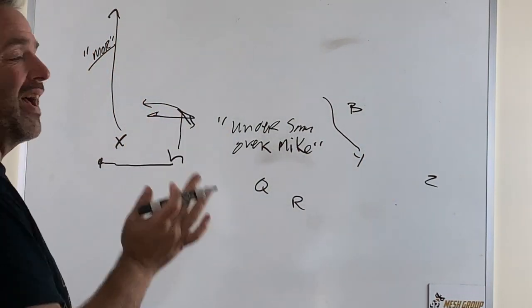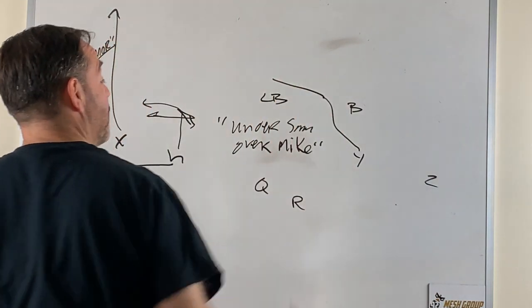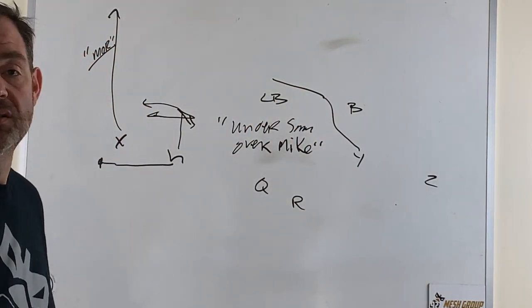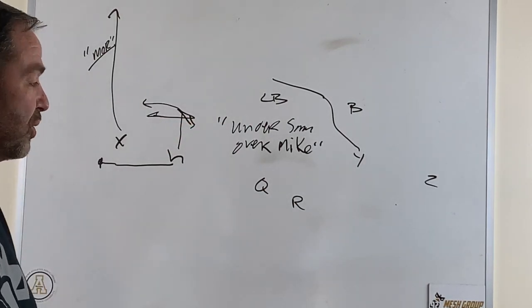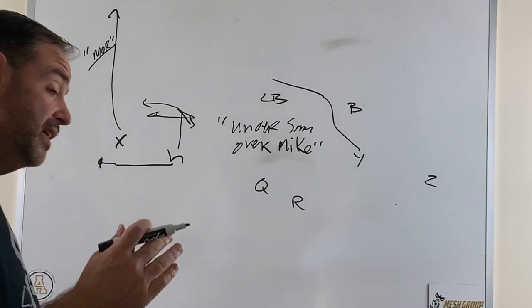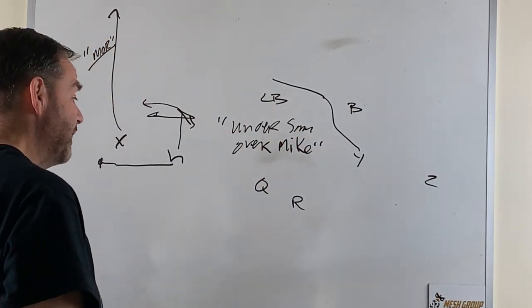But we want him to release inside and then climb over top of the inside linebacker, so whether that's Mike or the strong side inside guy if it's a three-four. That's kind of what we tell them: get underneath the flat defender, get over the inside guy.